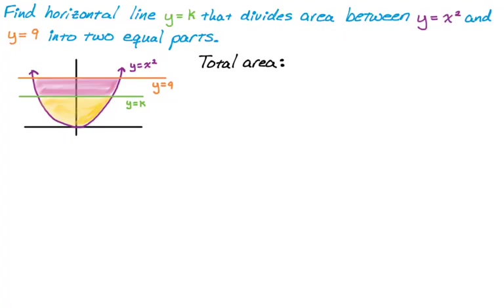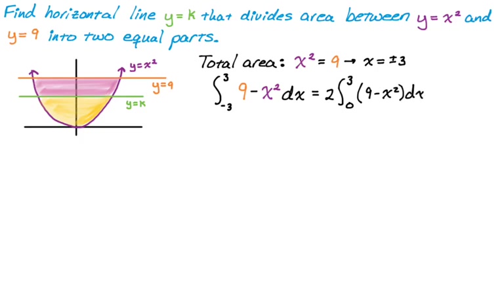To do that I need intersection points, so I need to know when x squared equals 9, but I already know that, that's when x is plus or minus 3. So I'm going to set up this integral from negative 3 to 3, top curve is 9, bottom curve is x squared, and that's with respect to x. Let's use symmetry on this. Anytime you can, you should use symmetry, so it's an even region. We're going to go 2 times integral from 0 to 3, and then reverse power rule. So 2, the quantity of 9x minus 1 third x cubed from 0 to 3.